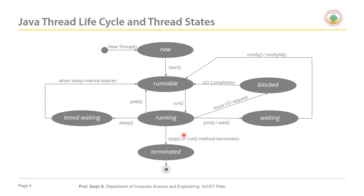You can put a Java thread in a timed waiting state by calling the sleep() method. The thread returns to the runnable state when it is notified by another thread or when the timed interval expires, whichever comes first. Timed waiting and waiting threads cannot use the processor even if the processor is available. When sleep() is called the thread changes from running to timed waiting, and when the time expires or another thread notifies it, it changes from timed waiting to runnable. If all thread operations finish, it moves to the terminated state.